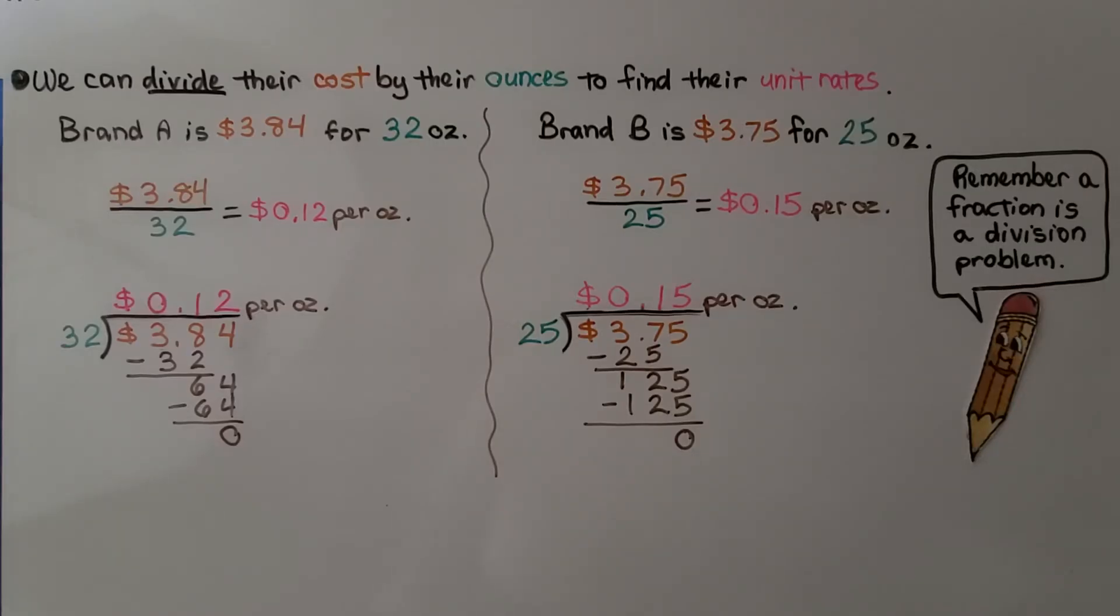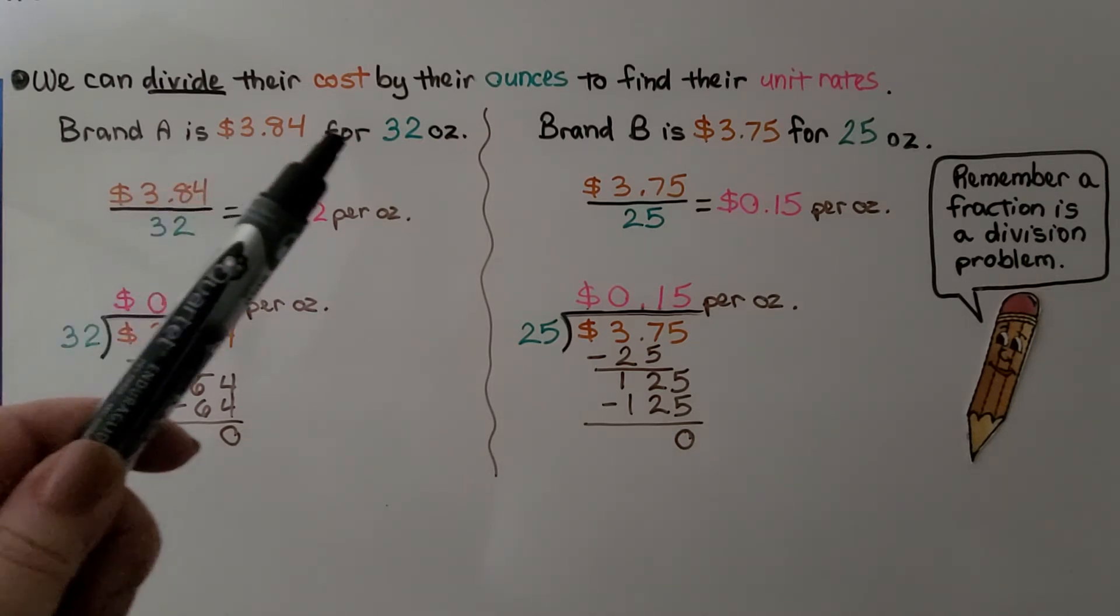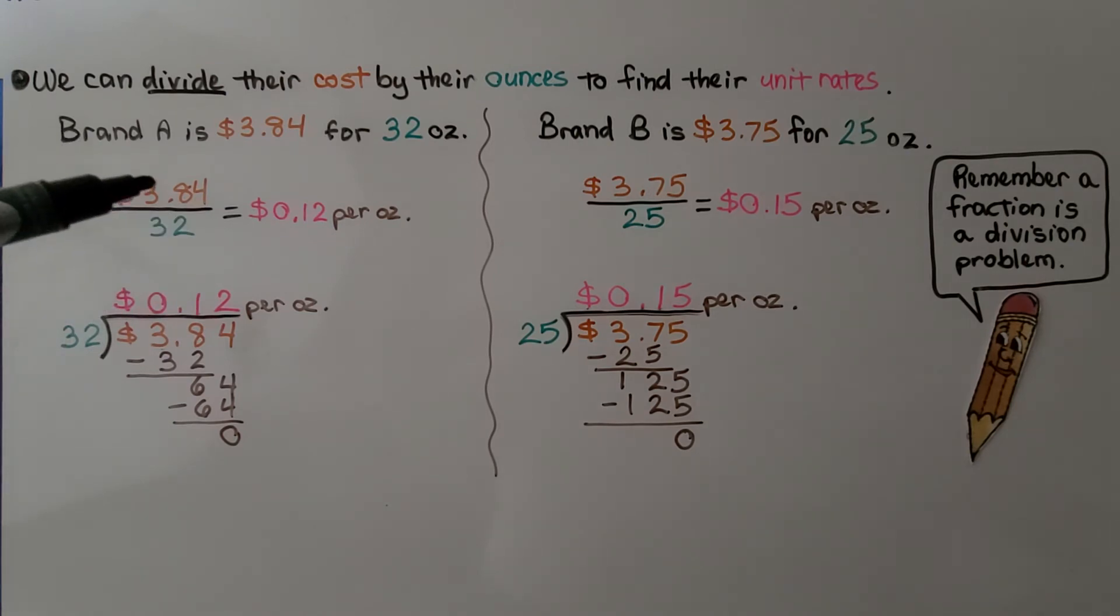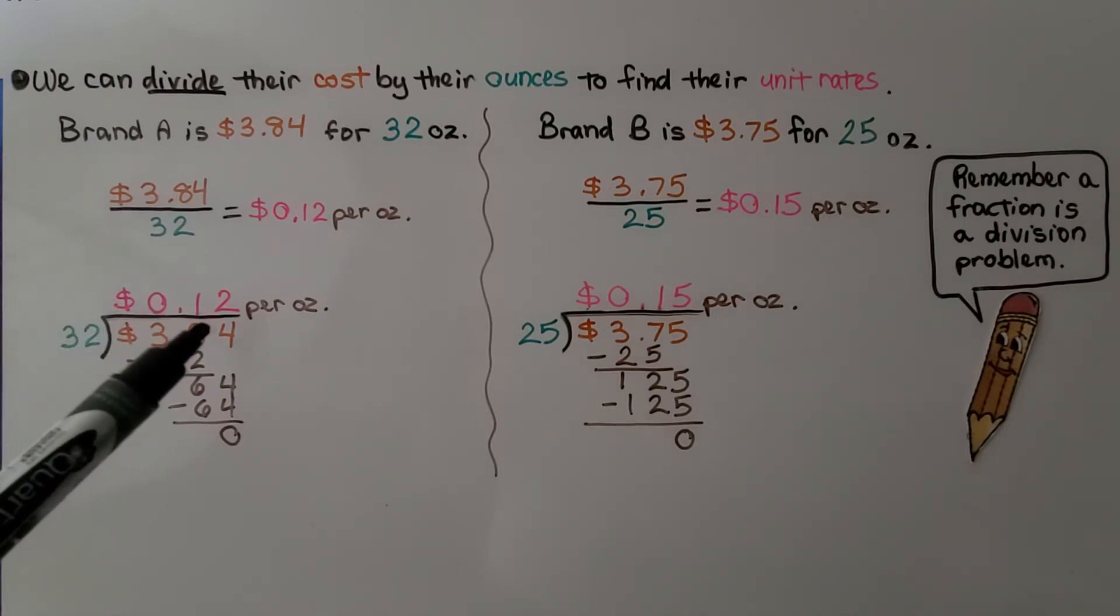We can divide their cost by their ounces to find their unit rates. Brand A was $3.84 for 32 ounces. We do $3.84 over the 32. When we do the division, we see it's $0.12 per ounce.